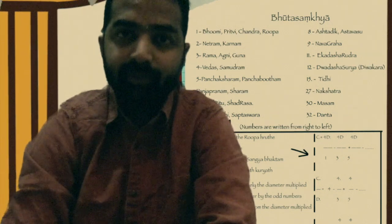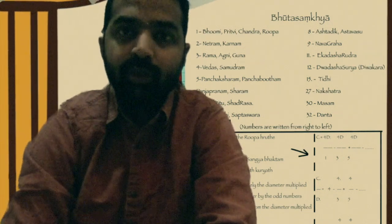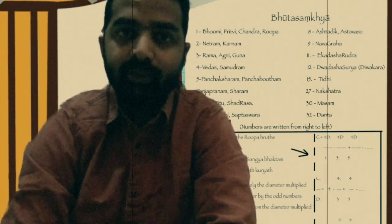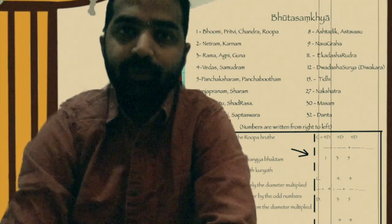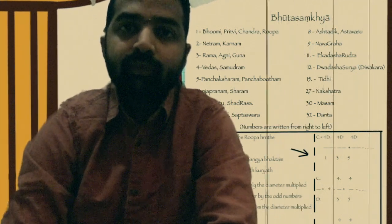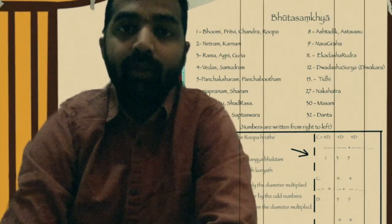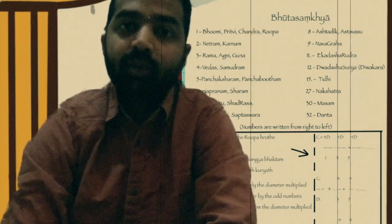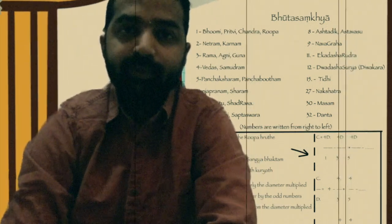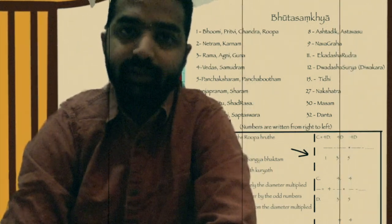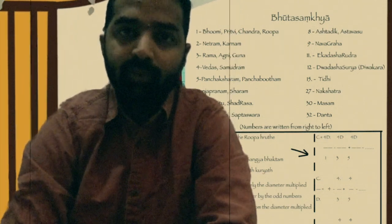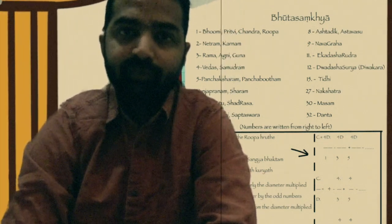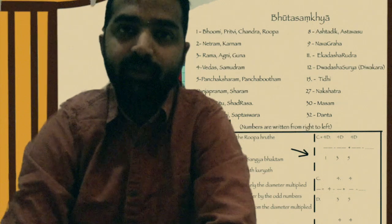Nethra — eyes — represents number 2. Ears represent number 2. Karam — hands — represent number 2. Rama represents number 3. Gunas represent number 3. We know we have got 3 gunas: the Sattvic guna, Rajoguna, and Tamoguna. So, gunas represent number 3.